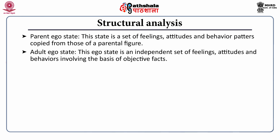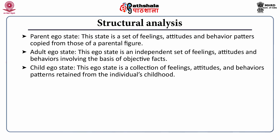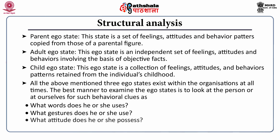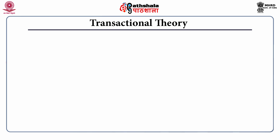The child ego state is a collection of feelings, attitudes, and behavior patterns retained from an individual's childhood. All three ego states exist within the organization at all times. The best way to examine an ego state is to look at behavioral clues: what words does the person use, what gestures do they use, what attitude do they possess, and what is the tone and quality of their voice.